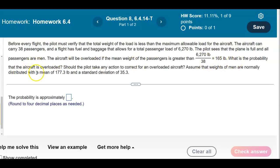What is the probability that the aircraft is overloaded, and should the pilot take any action to correct for an overload aircraft? Assume that the weights of men are normally distributed with a mean of 177.3 pounds and a standard deviation of 35.3.